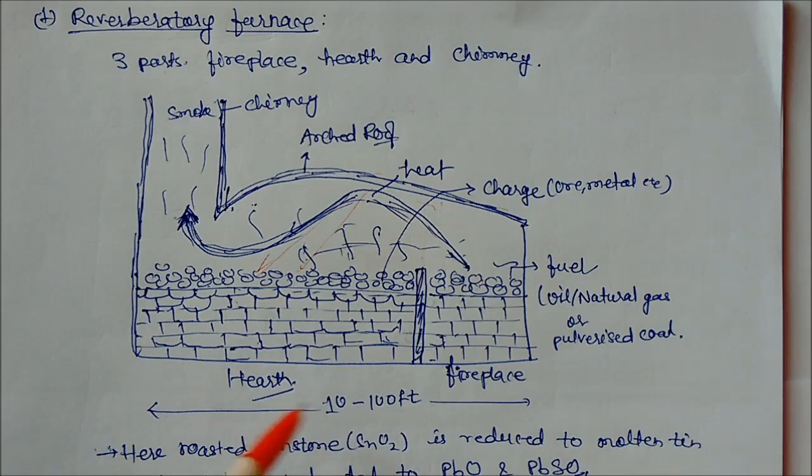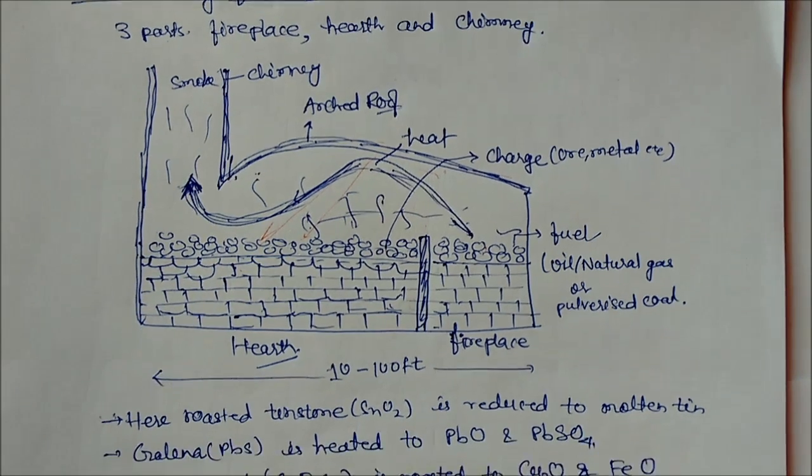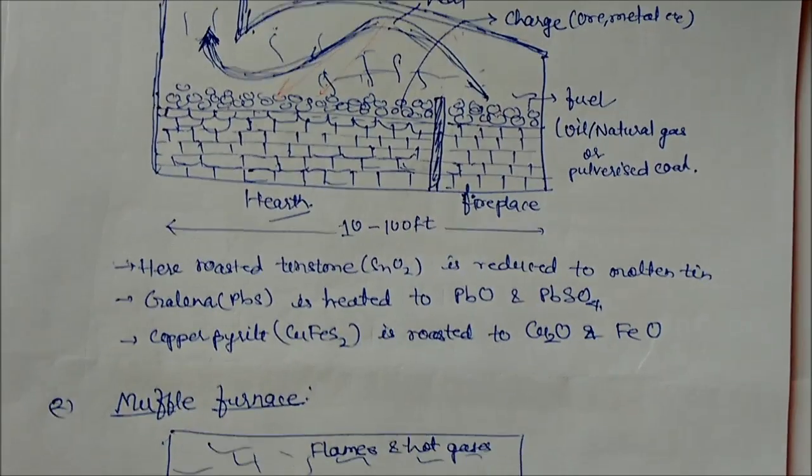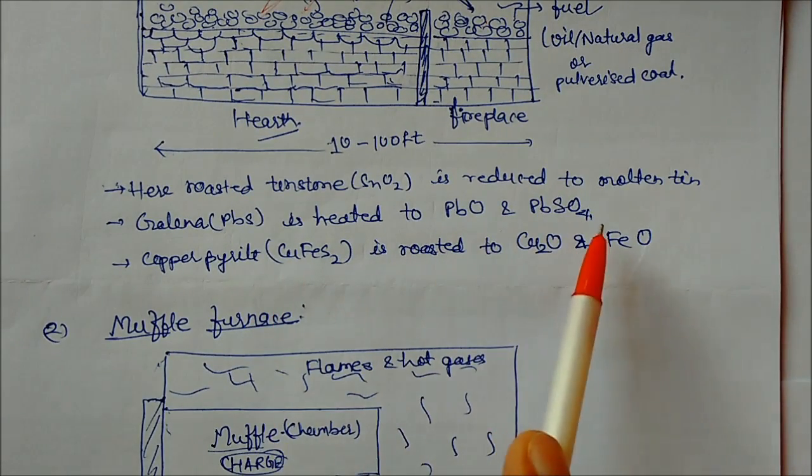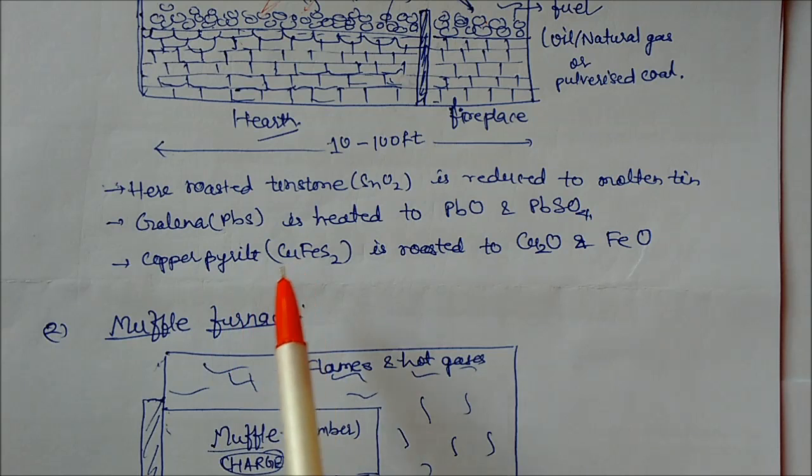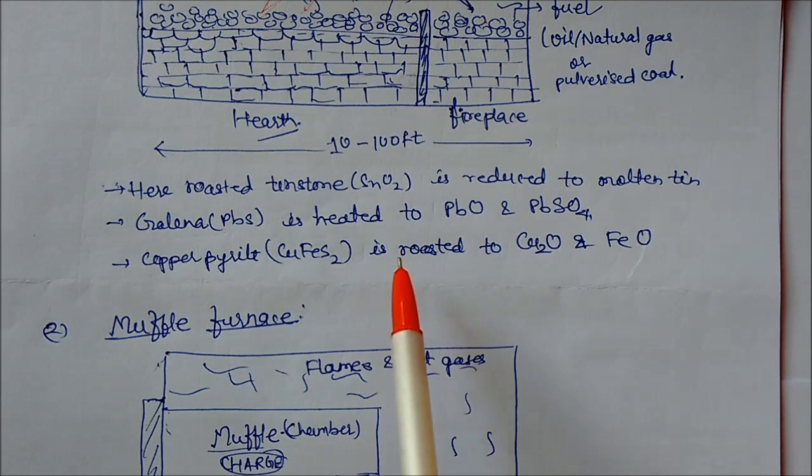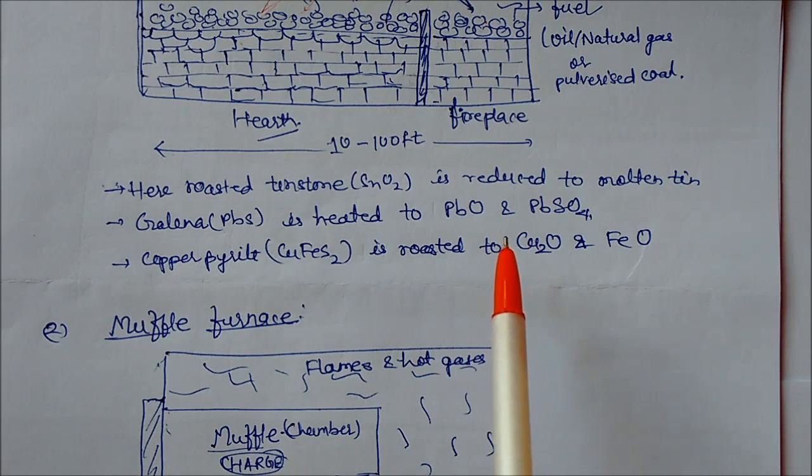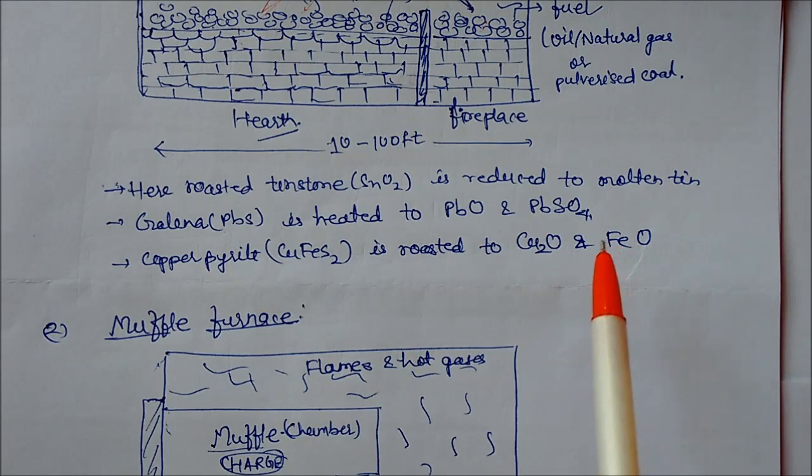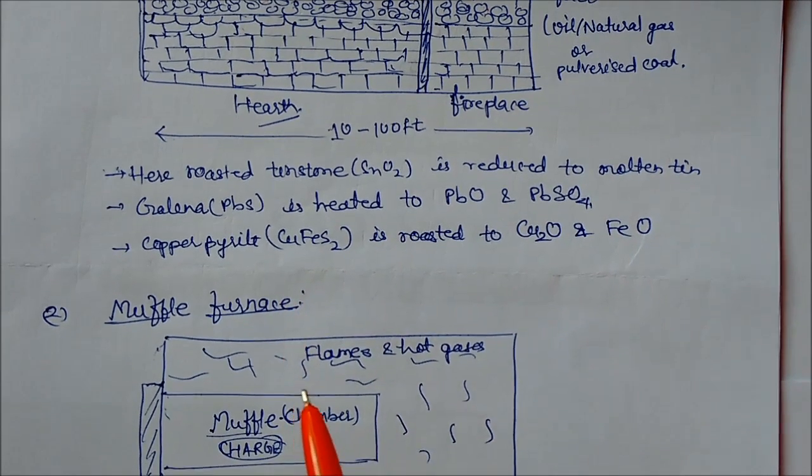In absence of air, metals or charges burn with the help of reflected heat. This is almost 10 to 100 feet. Here you can see roasted tin stone is reduced to molten tin, galena is heated to lead oxide and lead sulfate, and copper pyrites CuFeS2 is roasted to cuprous oxide and iron oxides.